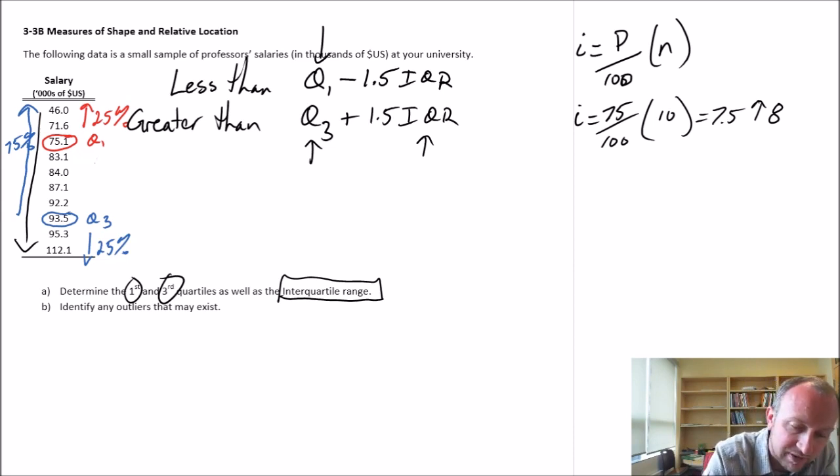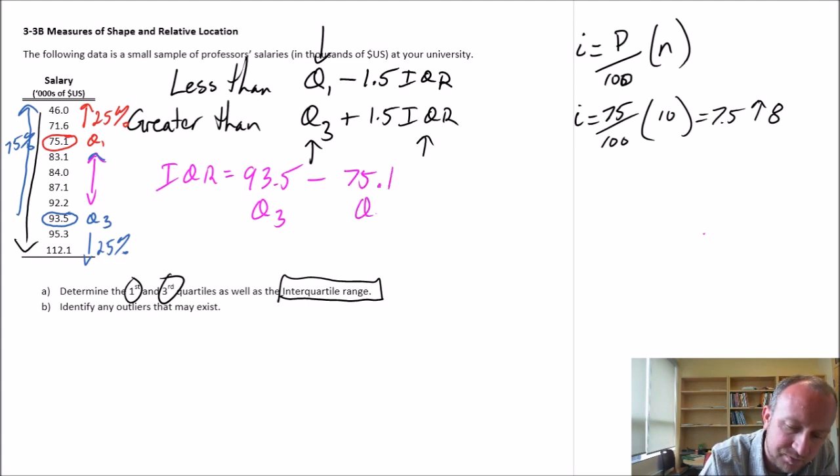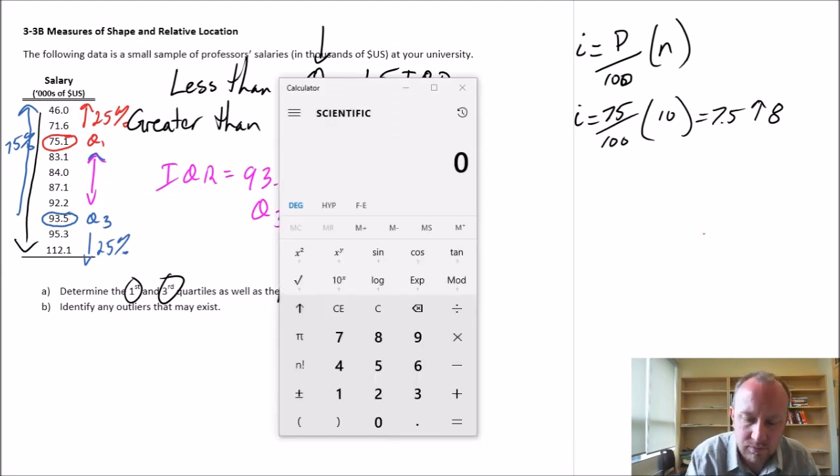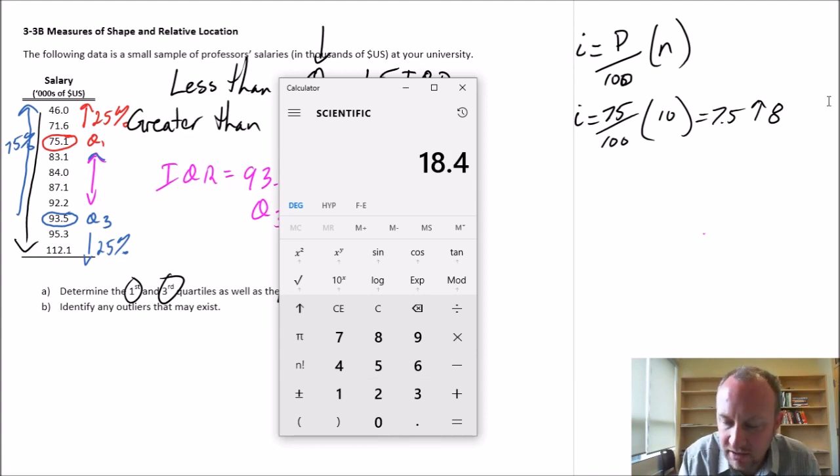And we use that information or that fact to calculate then the interquartile range. So the IQR, this is my interquartile range, my IQR is then the difference between 93.5, which is my third quartile, and my first quartile which is 75.1. And so that value, let me get my calculator, 93.5 minus 75.1, so my IQR is 18.4.